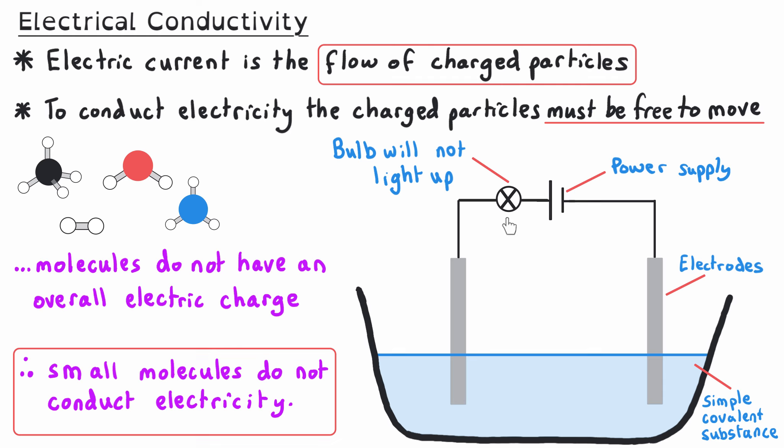Particle theory can be used to help explain changes of state. The particles in a solid are held together in ordered rows and a regular pattern, and the particles are not free to move around, only to vibrate about a fixed position. This is because there are strong forces between the particles holding them in that fixed position. In order to turn a substance from a solid into a liquid, these forces need to be overcome, or at least weakened, and energy needs to be put in. This energy is only supplied once a substance reaches its melting point.